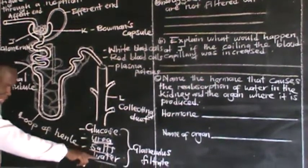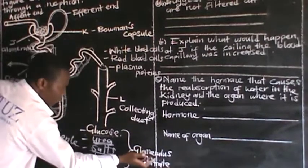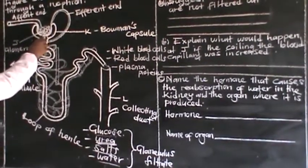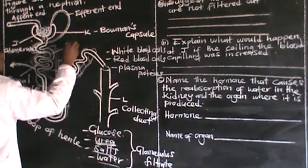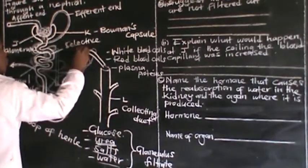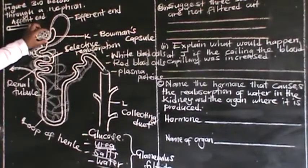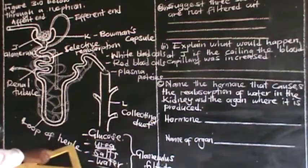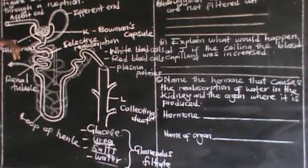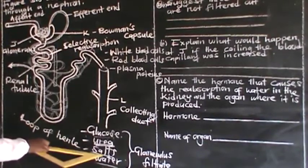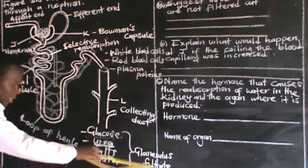Some salts and water are also needed. So as the glomerular filtrate passes via the renal tubule, there is what you call selective reabsorption. That is the second process in urine formation. Ultrafiltration is the first, followed by selective reabsorption, where substances with small molecules such as glucose, urea, salts, and water are filtered through the glomerulus into the Bowman's capsule.